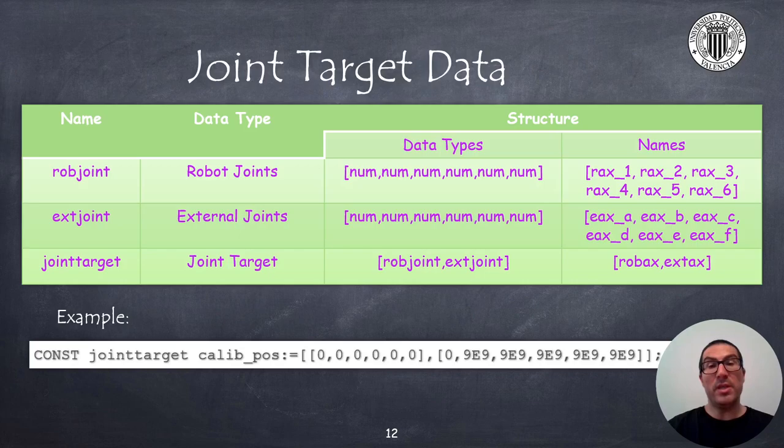The data type robot joint is used to define joint target values, and it is a composite type with six numeric elements with the names RAX1 to RAX6 from robot axis. Similarly, up to six other elements are used to define the external robot joints with the X-joint data type, similar to the previous one, but with the names AXXA up to AXXF. If a robot has no external axis, this can be indicated using the value 9E9. Finally, a joint target is a composite type that includes a ROB joint and an X-joint data, with the names ROB and X-axx. Here we can see an example in which a calibration joint position is defined. As you can see, in this example, there is a first or an external joint too.